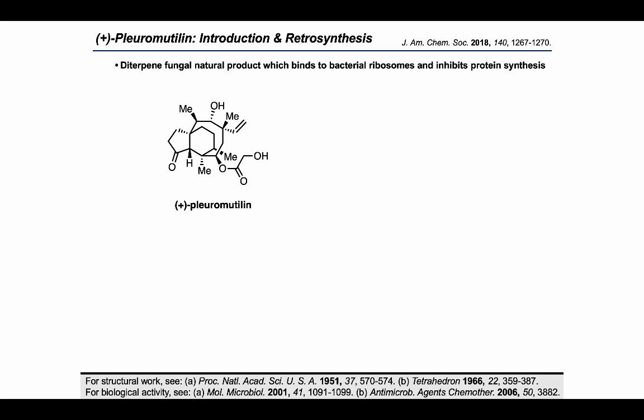Plurimutalin is a complex diterpenoid natural product which can bind to bacterial ribosomes and inhibit protein synthesis. This is one representation of plurimutalin, but to look at the Reisman group's retrosynthetic analysis of this target, let's go ahead and redraw this in a more 3D way.